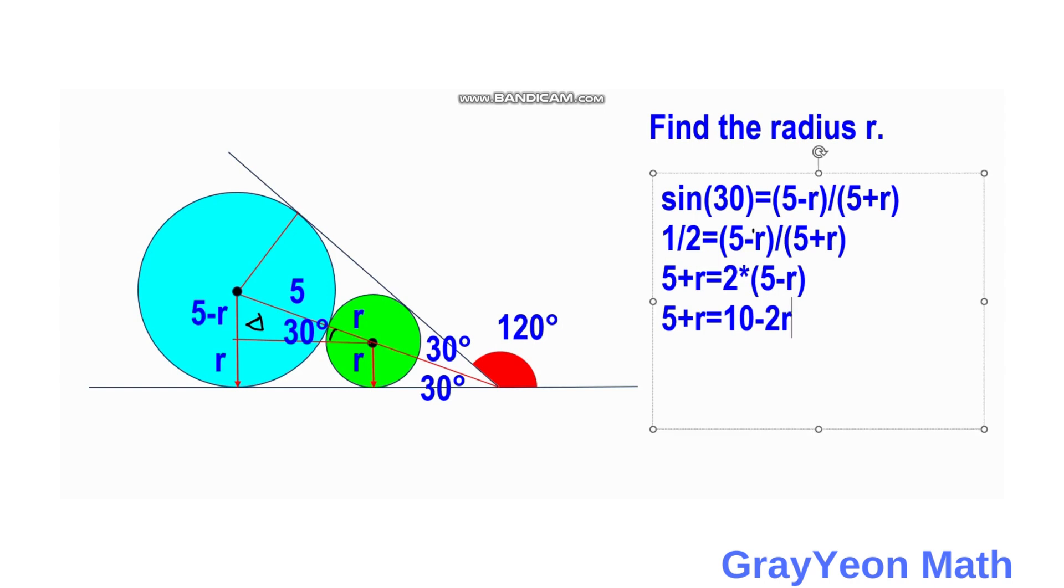If we simplify this, on the right-hand side we have 10 minus 5, and on the left we have R plus 2R. If you move the 2R to the left side, that becomes 3R equals 10.